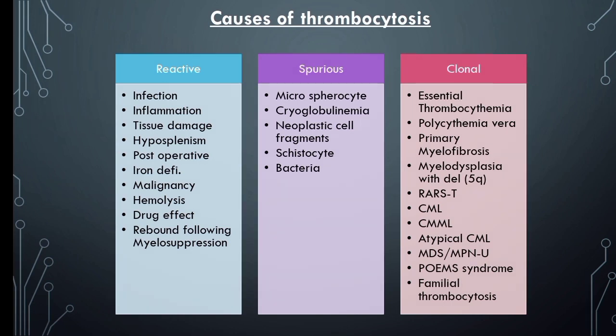Third is clonal causes. Once reactive causes are excluded and thrombocytosis is still persistent, it should be considered for clonal thrombocytosis. Myeloproliferative neoplasms like essential thrombocythemia, chronic myeloid leukemia, polycythemia vera, and primary myelofibrosis are the main clonal causes of thrombocytosis.